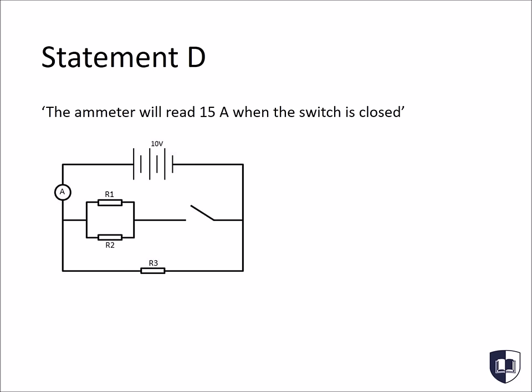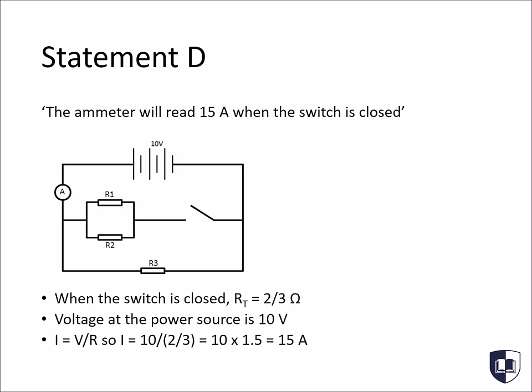Having looked at the theory, we can now answer the final statement. The ammeter will read 15 amps when the switch is closed. We saw earlier, when we analysed statement B, that when the switch is closed, the total resistance of the circuit changes, as it now becomes a parallel circuit and not a series circuit, which it was when the switch was open. We calculated that the resistance of the circuit will therefore become 2 thirds of an ohm. Rearranging V equals IR to I equals V over R, we know we have the voltage, which is 10, and we've calculated the new resistance of the circuit when the switch is closed, which is 2 thirds of an ohm. So, 10 divided by 2 thirds equals 15. The ammeter will therefore read 15 amps when the switch is closed.